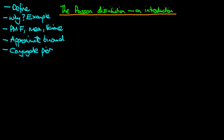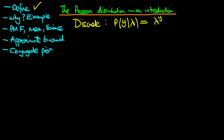Starting by defining the Poisson distribution, the first thing to note is that it is a discrete distribution with a likelihood equal to lambda to the power y, times e to the power minus lambda, all divided through by y factorial. This applies when y is 0, 1, 2, 3, etc. — so y measures a non-negative integer.